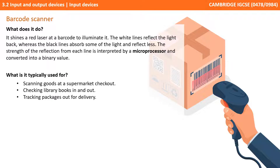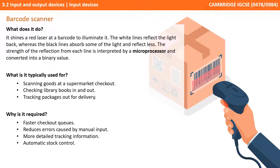Barcode scanners are typically used for scanning goods at supermarket checkouts, checking library books in and out, and tracking packages that are out for delivery. Advantages include faster checkout queues, a reduced need for manual input thus reducing human errors, more detailed tracking information, and they allow for automatic stock control.